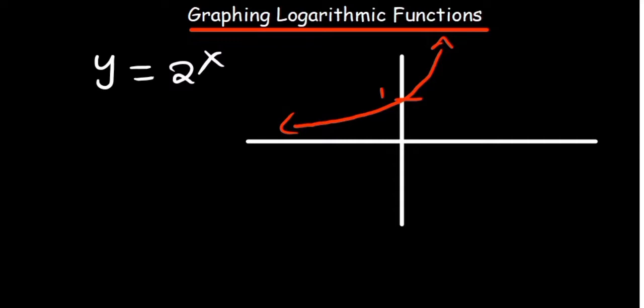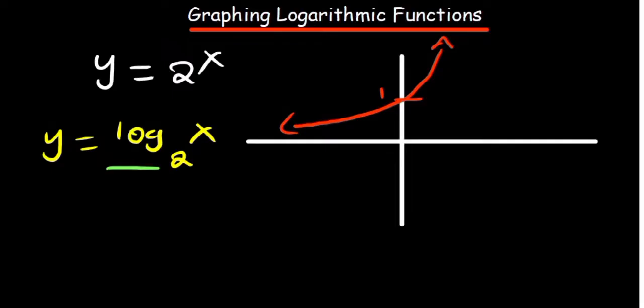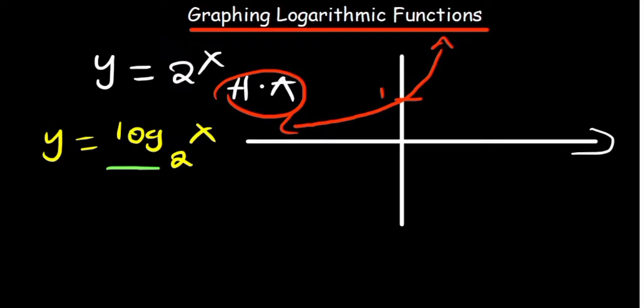So what is very important to note is that as we talk about a logarithmic function, for example if you say y is equal to log₂(x), it's basically going to be an inverse of that. A logarithm is basically an inverse of an exponential function. Under the exponential part, we said the x-axis is basically the horizontal asymptote. So as we talk about logarithms, we are going to have what we call the vertical asymptote.